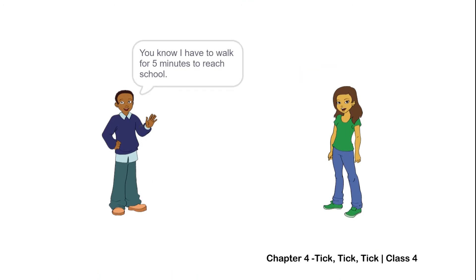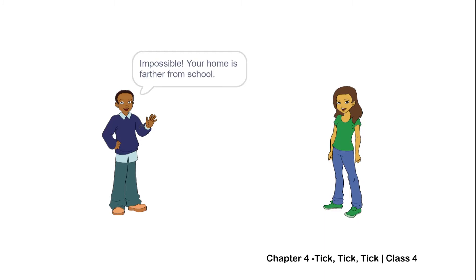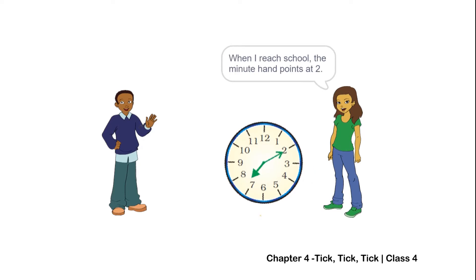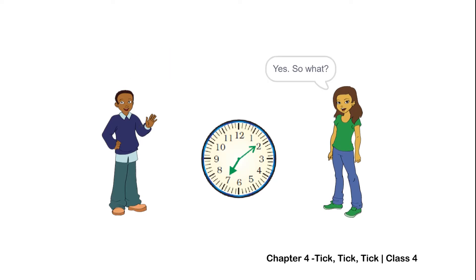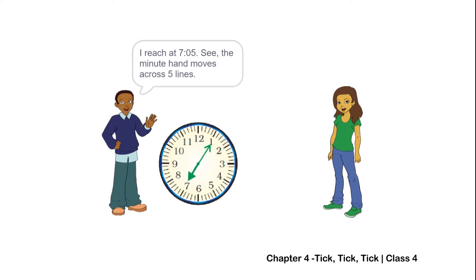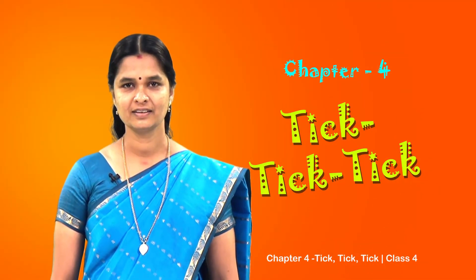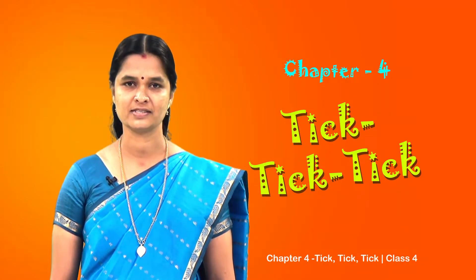Hi Shazia! Hi Pamposh! I have to walk five minutes to reach school. I just walk two minutes. Impossible - your home is farther from school! I checked my watch: I start at seven o'clock, and when I reach school the minute hand points at two, so isn't it two minutes past seven? You're wrong - you reach school at seven ten. The minute hand moves across ten small lines after twelve, so it is ten minutes past seven, or seven ten. Did you notice why Shazia was wrong? She ignored all the small lines between the numbers.